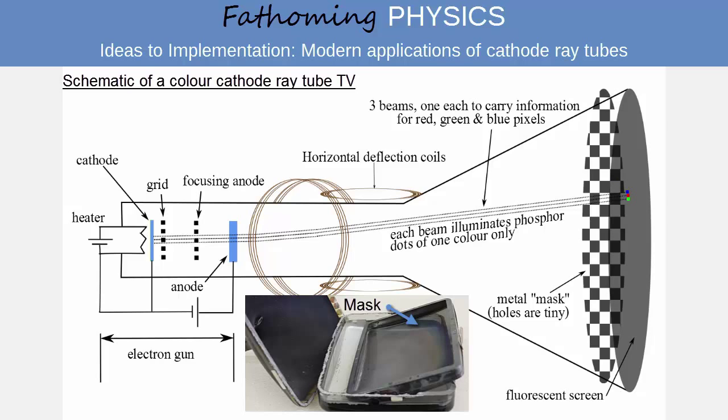To ensure that a pixel is only illuminated by the correct beam, a mask is placed between the electron gun and the screen, which consists of a very fine mesh. As the beams arrive at slightly different angles, the metal between the holes in the mesh blocks the electron beams from hitting pixels that they are not meant to hit.